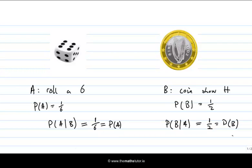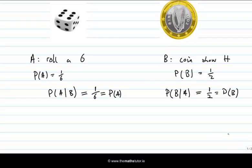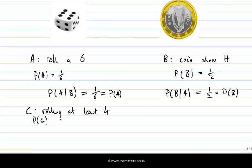Now, just to contrast this situation with another, let's pick another event concerning the die roll. Event C is rolling a number that's at least 4 — so rolling a 4, 5, or 6. The probability of C is 1/2, because there are 3 successful outcomes and a total of 6 equally likely outcomes, giving us 3 over 6, which is a half.